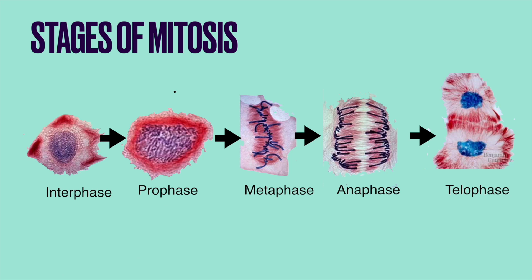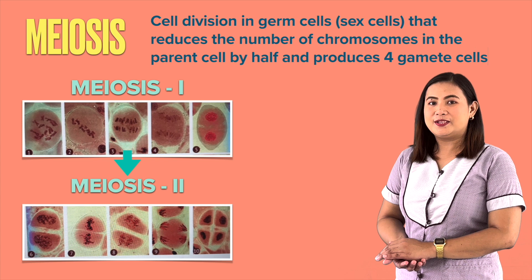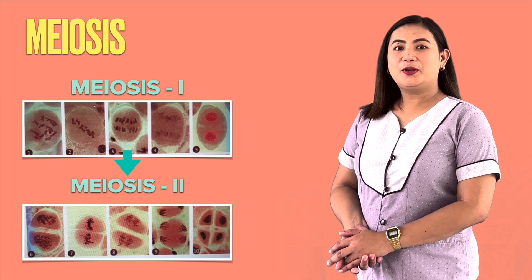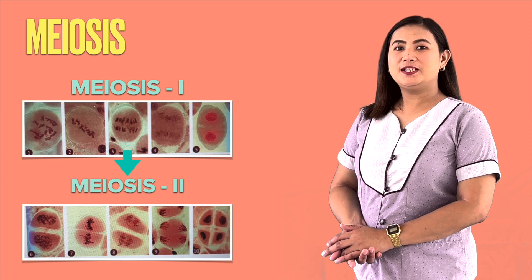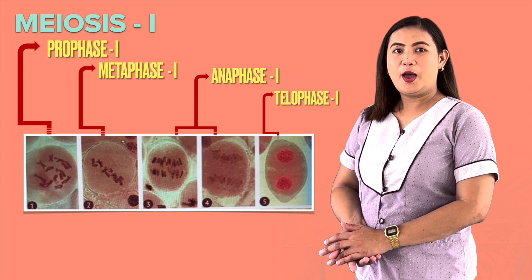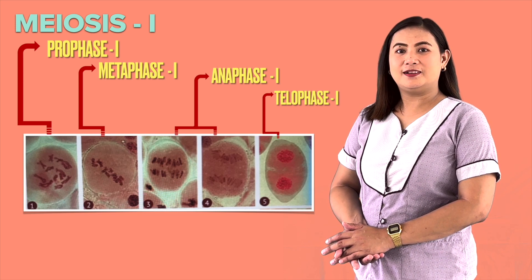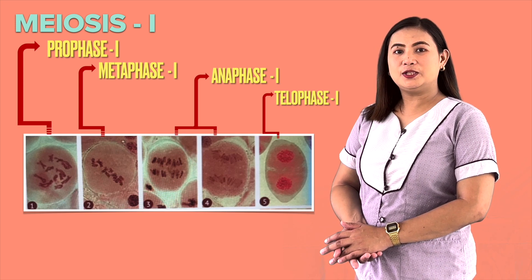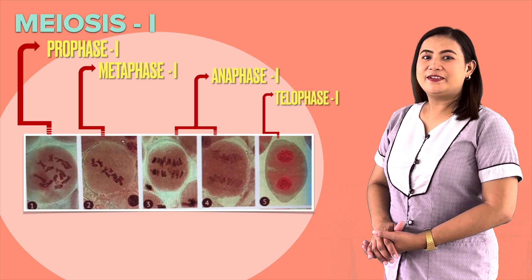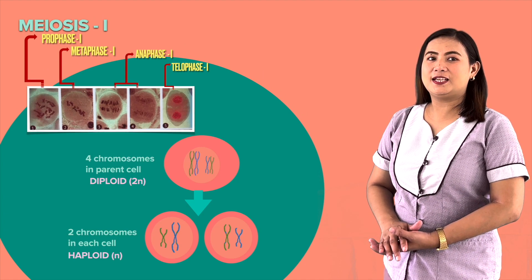Now we understand the stages of mitosis. Let's move on to the second type of cell division — meiosis — where the cell undergoes two rounds of cell division to produce four daughter cells. Meiosis undergoes two stages: meiosis 1 and meiosis 2. Meiosis 1 has the same process as mitosis with stages of prophase 1, metaphase 1, anaphase 1, and telophase 1. However, instead of sister chromatids, meiosis 1 occurs with homologous chromosomes and crossing over. Meiosis 1 separates homologous pairs of chromosomes and reduces the diploid cells to haploid cells.